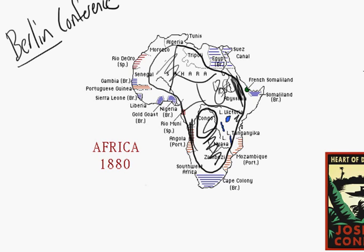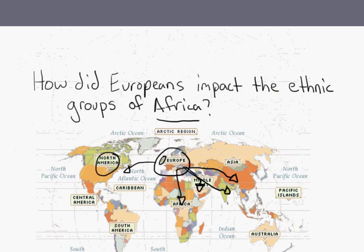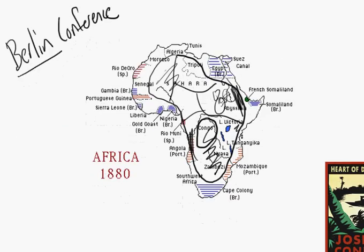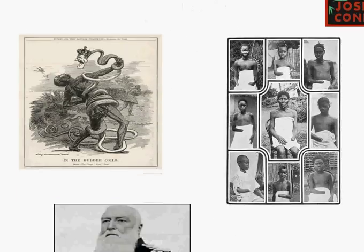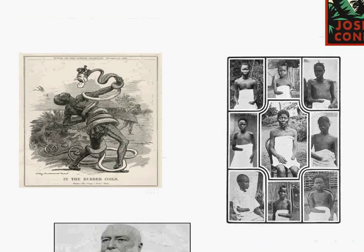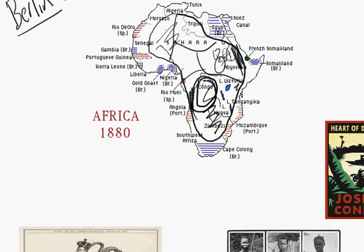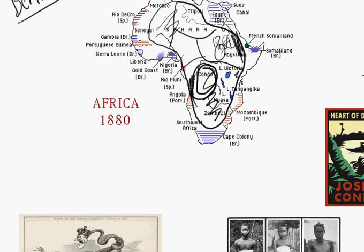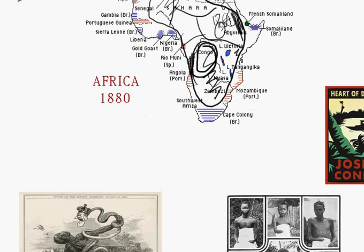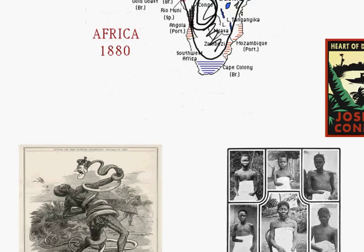The Europeans left in the 1960s and 70s, and Africa is really trying to work this out now. So that was the Berlin Conference. Another impact — a very negative one — is the Belgian Congo, one of the darkest parts of African imperialism by Europe.